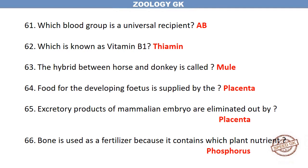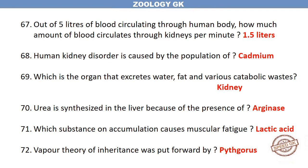The hybrid between horse and donkey is called a mule. Food for the developing fetus is supplied by the placenta. Excretory products of the mammalian embryo are eliminated by the placenta. Bone is used as a fertilizer because it contains the plant nutrient phosphorus. Out of 5 litres of blood circulating through the human body, how much blood circulates through the kidneys per minute?